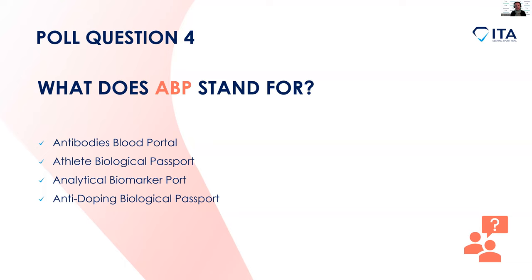Let's stop the poll and take a look. The most popular answer at 46% is 'anti-doping biological passport,' but in fact the correct answer is the athlete biological passport. We just had a bit of fun making up some of the other answers.